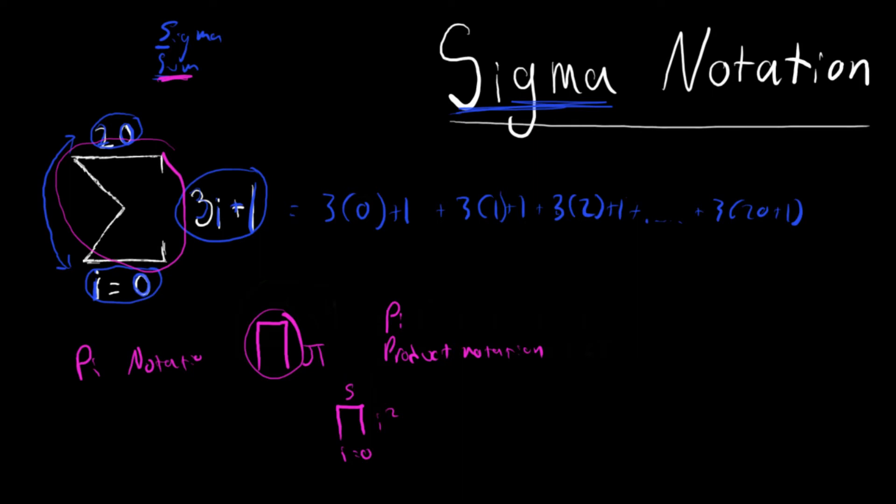So instead of being 0 squared plus 1 squared plus 2 squared, it would actually be 0 squared times 1 squared times 2 squared times 3 squared times 4 squared times 5 squared.